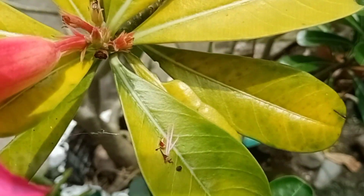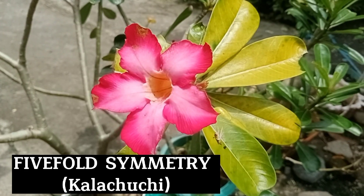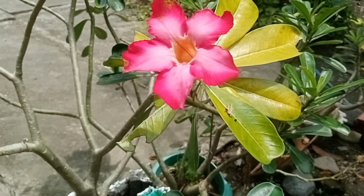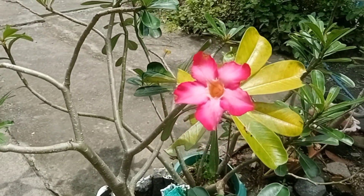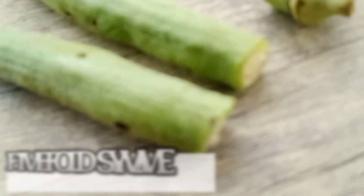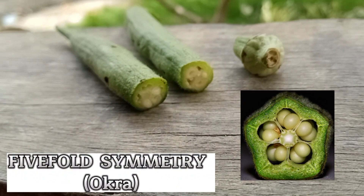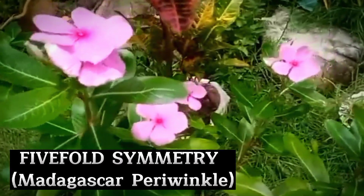First, I have here an example of 5-fold symmetry, which is kalachuchi. And the second one is okra. This is also an example of 5-fold symmetry. And the third example is also 5-fold symmetry.